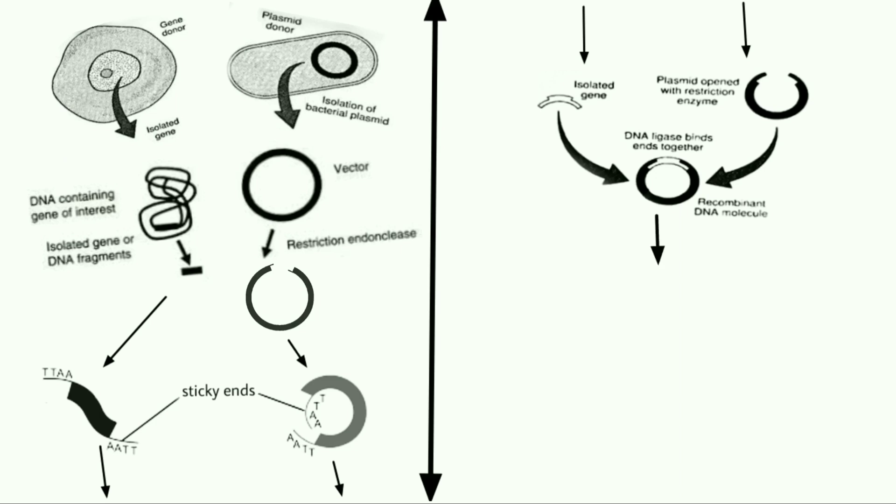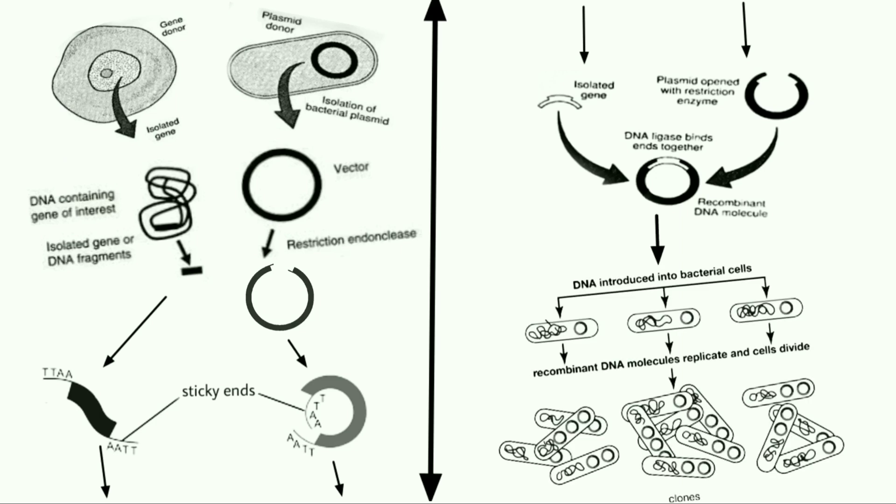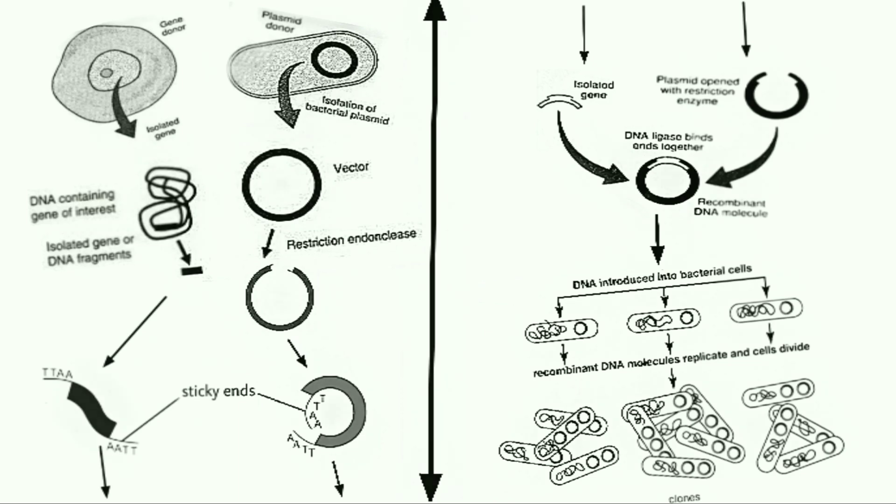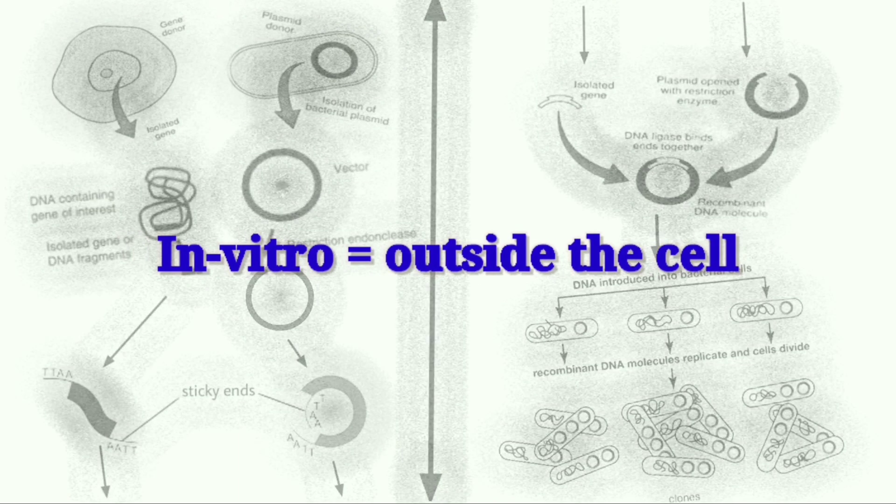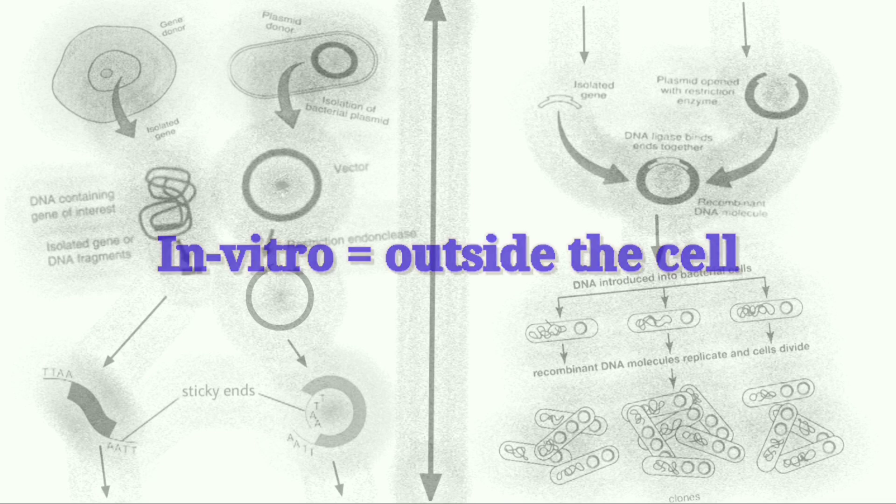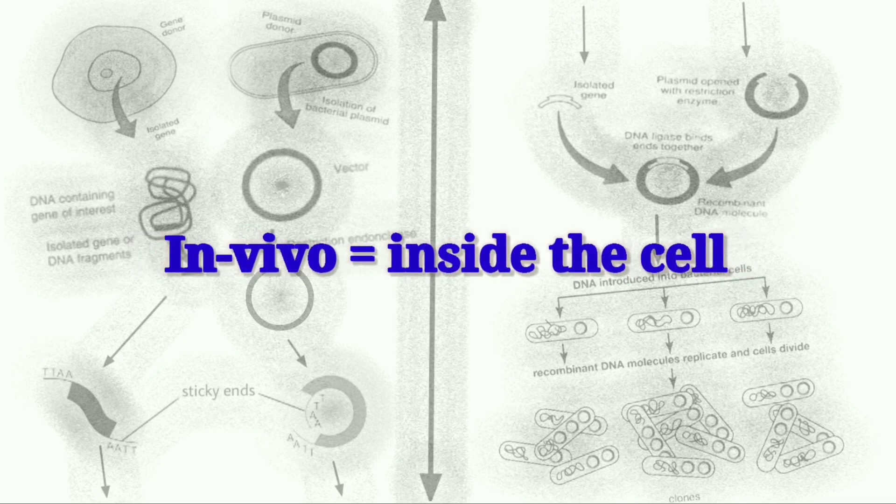We need many copies of recombinant DNA, so it needs to be cloned. Cloning can be done in vitro, meaning laboratory condition outside the cell, with the help of polymerase chain reaction, PCR. Or in vivo condition, meaning inside the cell.